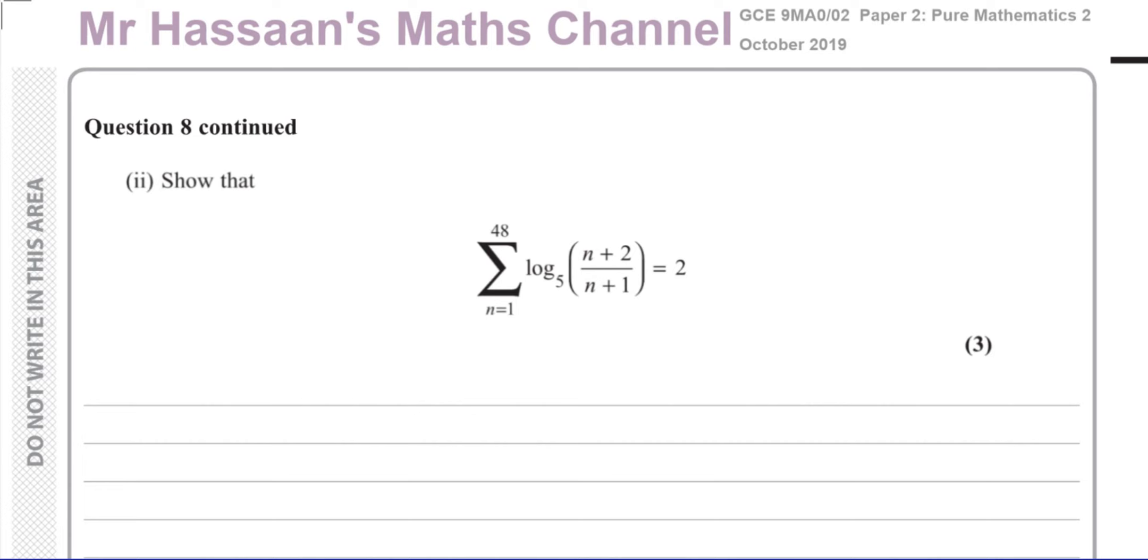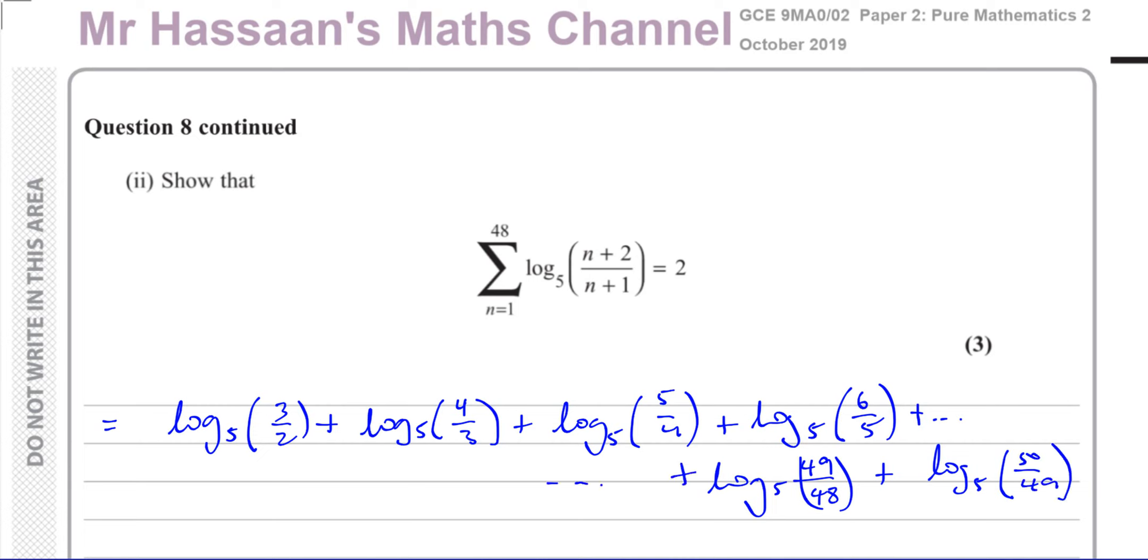So what I would suggest we do here is we should generate a few terms. So when you put n equals 1 in here, we'll have log to the base 5 of 3 over 2. Plus, and we have log to the base 5, when you put n equals 2 in here, we'll have 4 over 3. You can see a pattern forming here. Plus log to the base 5 of, the next term is going to be, put 3 in here, that's 5 over 4. So you can see that there's a little pattern forming here. Log to the base 5 of 6 over 5, dot dot dot, all the way to the end. I'm going to put the last two terms. So when I put 48, when I put 47, it will be log to the base 5 of 49 over 48. Plus, and the last term will be log to the base 5 of 50 over 49. So you've got to have all those terms in between that will follow this pattern.